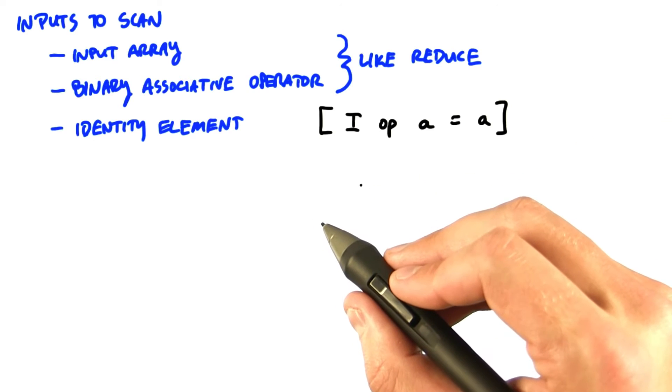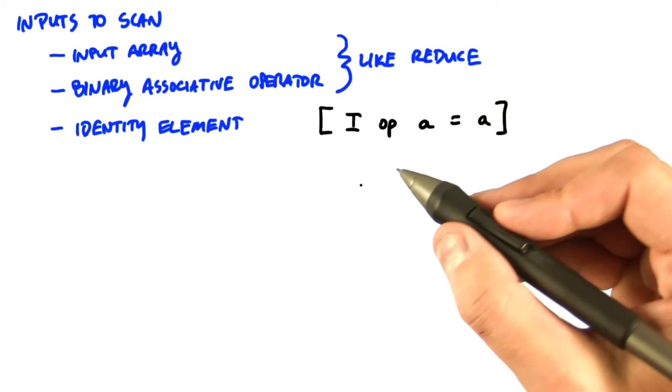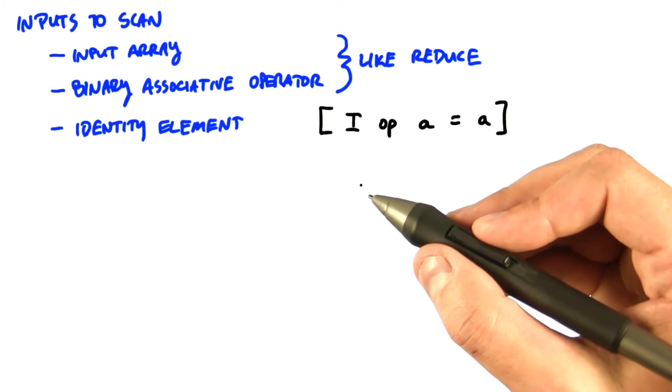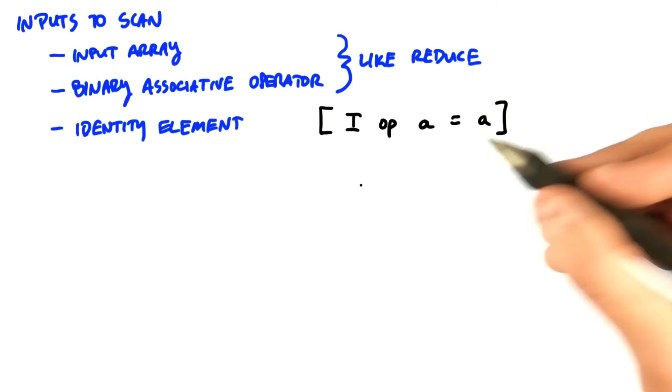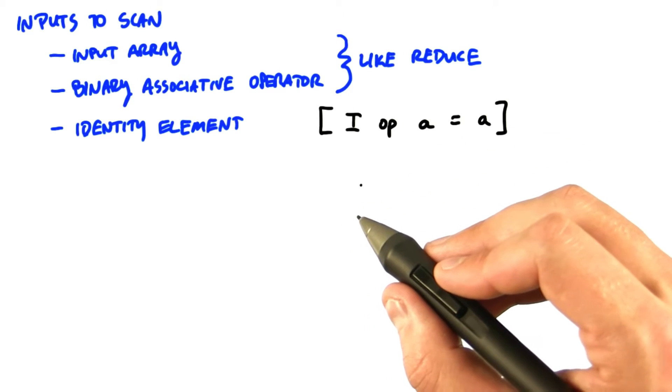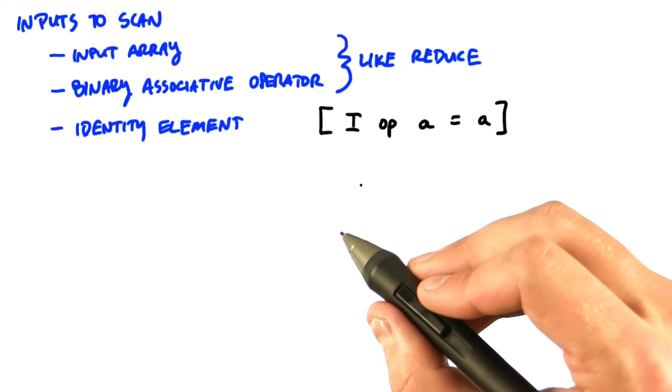For completeness, I should note that all the operators we use in this class are also commutative. x op y gives you the same result as y op x. Implementations turn out to be a little bit more complex if you don't use that assumption, but we're not going to cover that here.